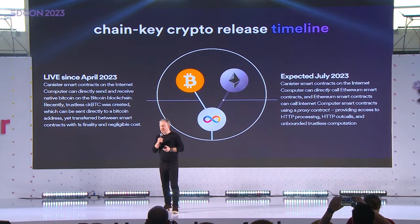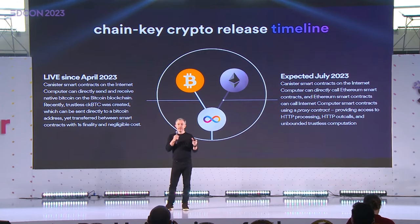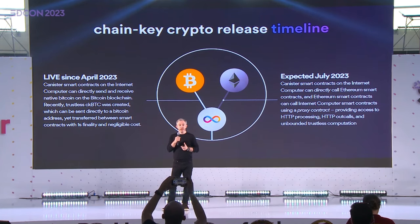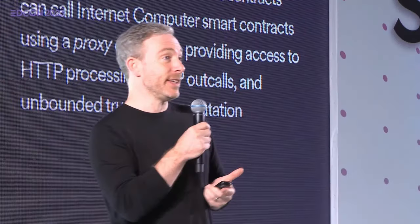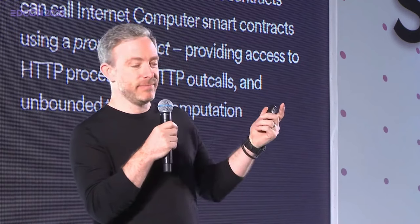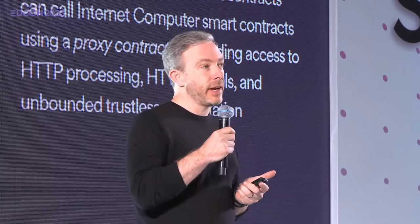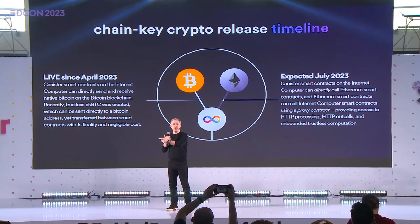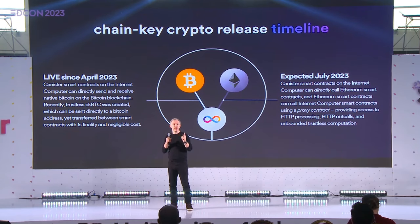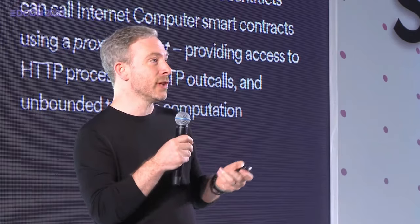On the chain key crypto release timeline: the internet computer is integrated at the network level with Bitcoin — internet computer nodes speak to Bitcoin nodes, and smart contracts on the internet computer are able to create Bitcoin transactions without having private keys. The chain key crypto signs the Bitcoin transactions, and this is hidden behind easy-to-use APIs. The next phase is integrating with Ethereum, again at the network level — you're going to have bidirectional calling between canister smart contracts on the internet computer and EVM smart contracts on Ethereum, without a bridge. So you'll only be exposed to the security concerns of two different blockchains rather than also being exposed to the concerns of a bridge. That's a very big deal, and it also removes all the latency.